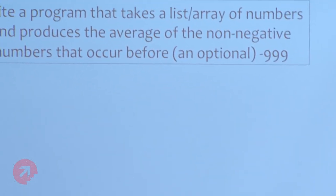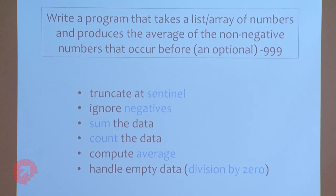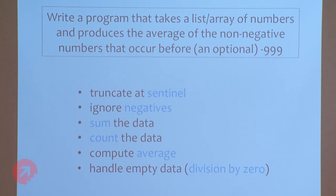Let's come back to the rainfall problem. How can this possibly be difficult? It looks easy to us because we're experienced programmers. But if you really pull this apart, there are six different subtasks in this problem. You have to take input and truncate it at this sentinel — minus 999 — which may or may not show up. You have to ignore negative numbers, sum data, count data, compute an average, and handle empty data or the division-by-zero case. There are actually six separate subtasks buried in this problem.